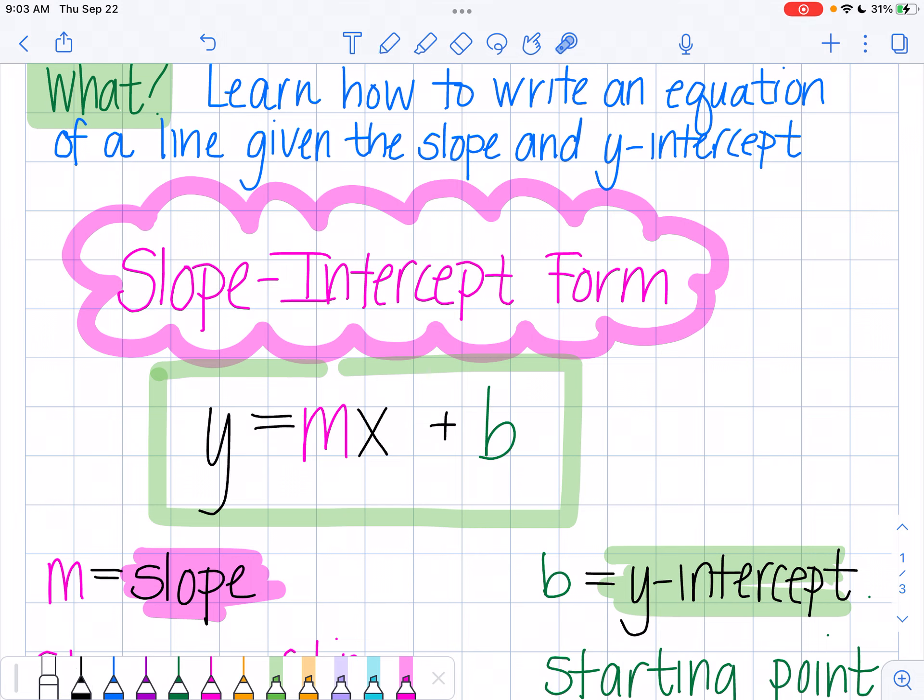Slope-intercept form looks like y equals mx plus b, where m represents your slope and b represents your y-intercept.